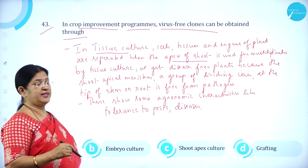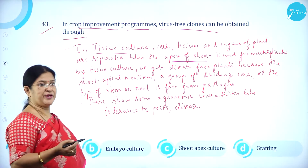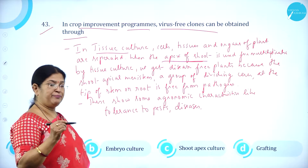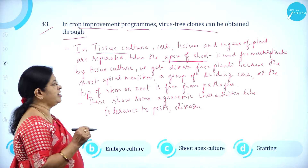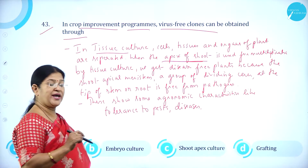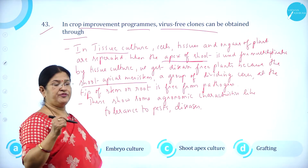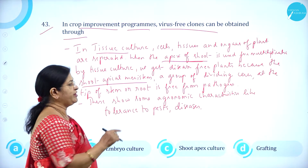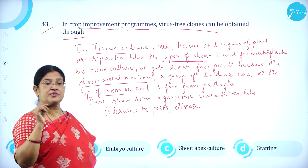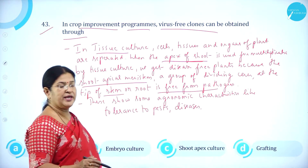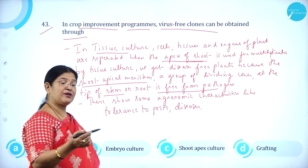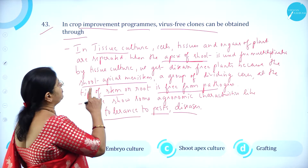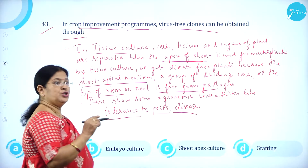In tissue culture, cells, tissues and organs of plants are separated. When the apex of shoot — the shoot stem tip — is used for multiplication by tissue culture, we get disease-free plants. The shoot apical meristem cells have the characteristic to divide and re-divide. The tip of the stem or root is free from pathogens, so these show agronomic characteristics like tolerance to pests and diseases. In crop improvement programs, virus-free clones can be obtained through shoot apex culture — Option C is correct.